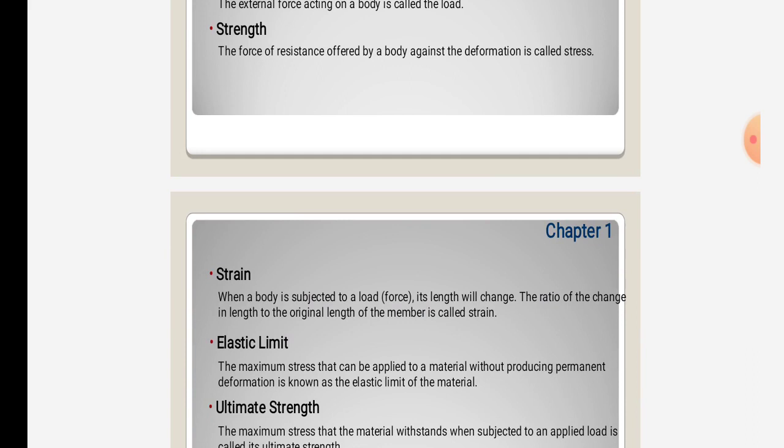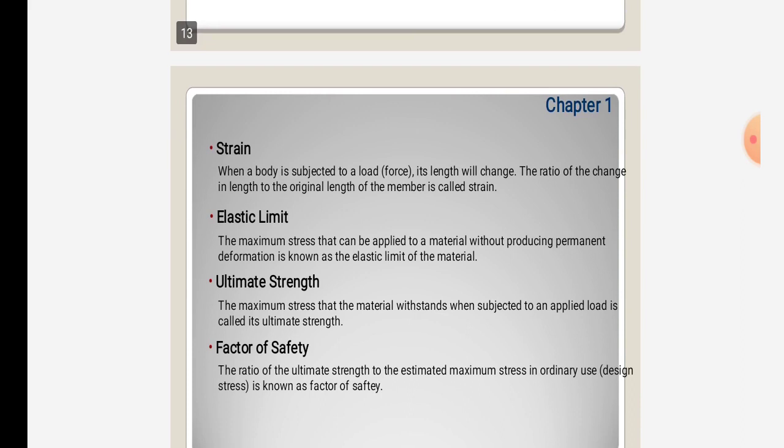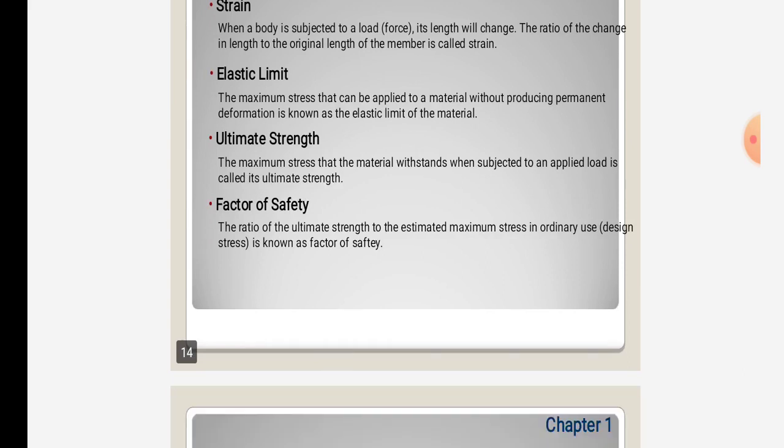Elastic limit: the maximum stress that can be applied to a material without producing permanent deformation is known as the elastic limit of the material. Ultimate strength: the maximum stress that the material withstands when subjected to an applied load. Factor of safety: the ratio of ultimate strength to the estimated maximum stress in ordinary use, also known as design stress.